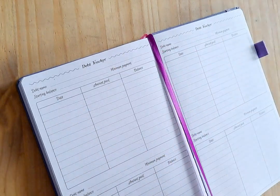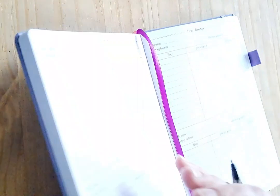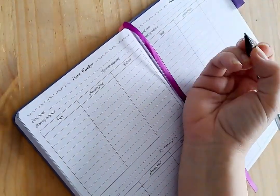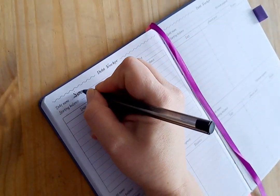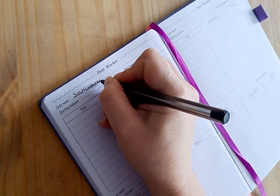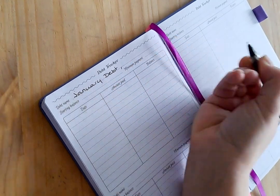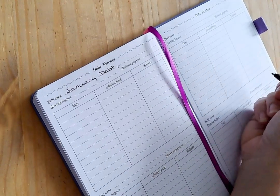So this is my debt tracker in my planner which is just a buy expenses tracker and things. So I'm just going to name this January debt and we'll take it from here.